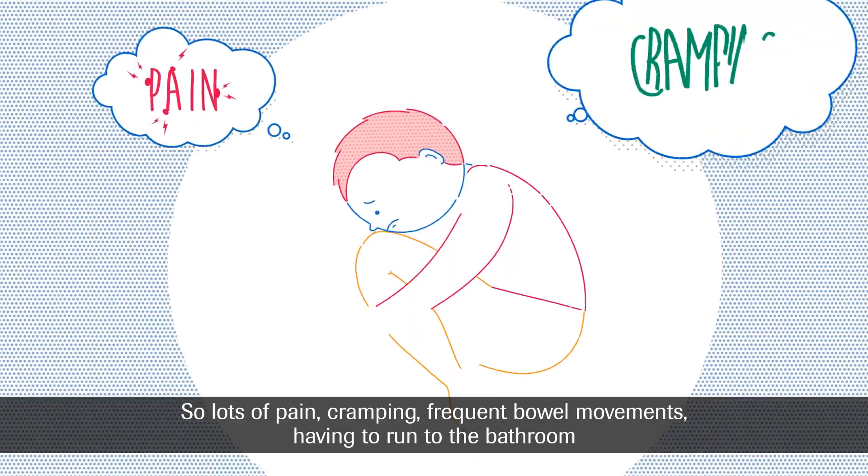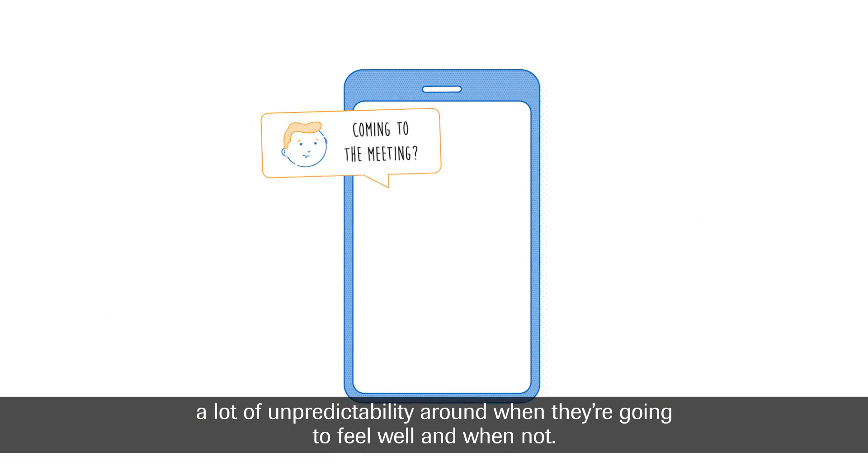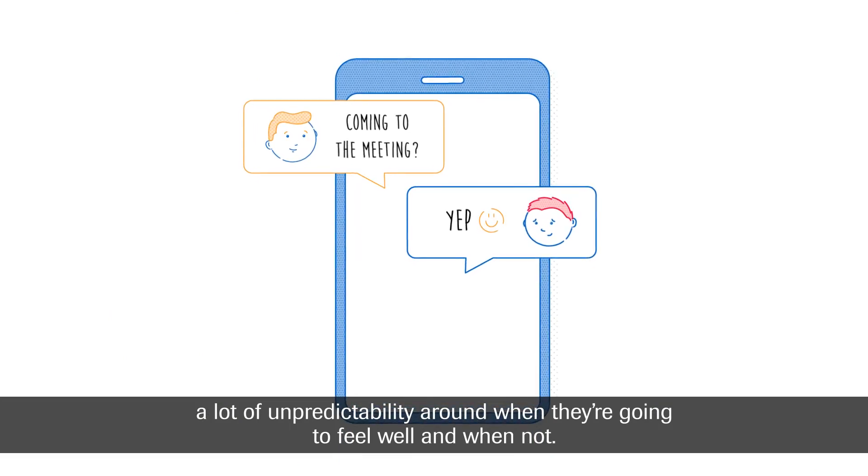So lots of pain, cramping, frequent bowel movements, having to run to the bathroom, a lot of unpredictability around when they're going to feel well and when not.